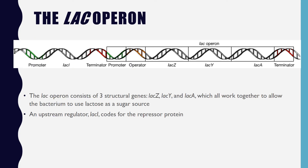The structural genes in a lac operon are lacZ, lacY, and lacA. LacZ encodes beta-galactosidase, which is an enzyme that cleaves the lactose into glucose and galactose. LacY encodes lactose permease, which is a transmembrane protein that pumps lactose into the cell using a proton gradient. LacA encodes thiogalactoside transacetylase, which is an enzyme that transfers an acetyl group from acetyl-CoA to the lactose. Together, these genes break down lactose into a usable carbon source. The repressor protein is encoded by lacI, which is found just upstream of the lac operon.